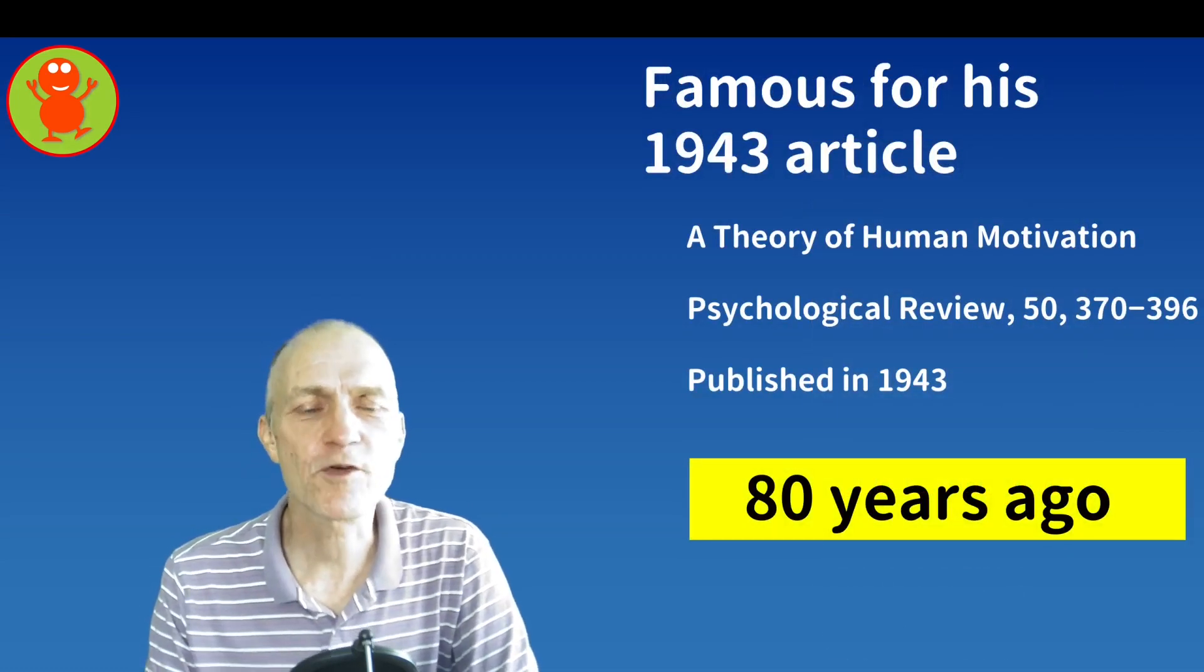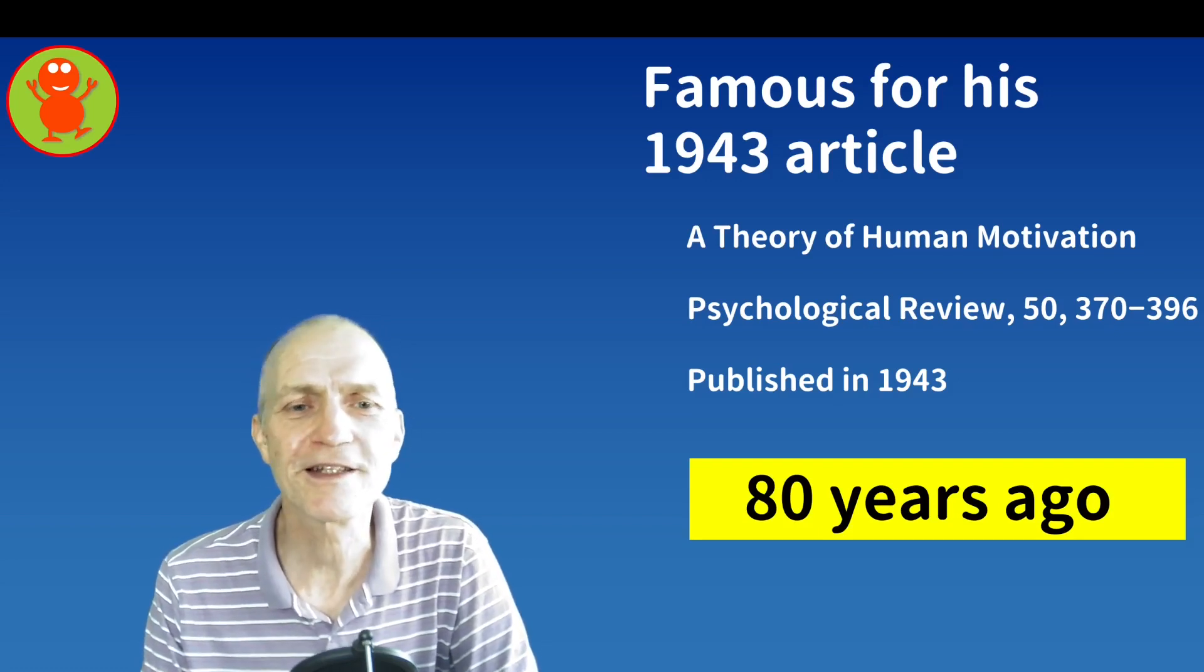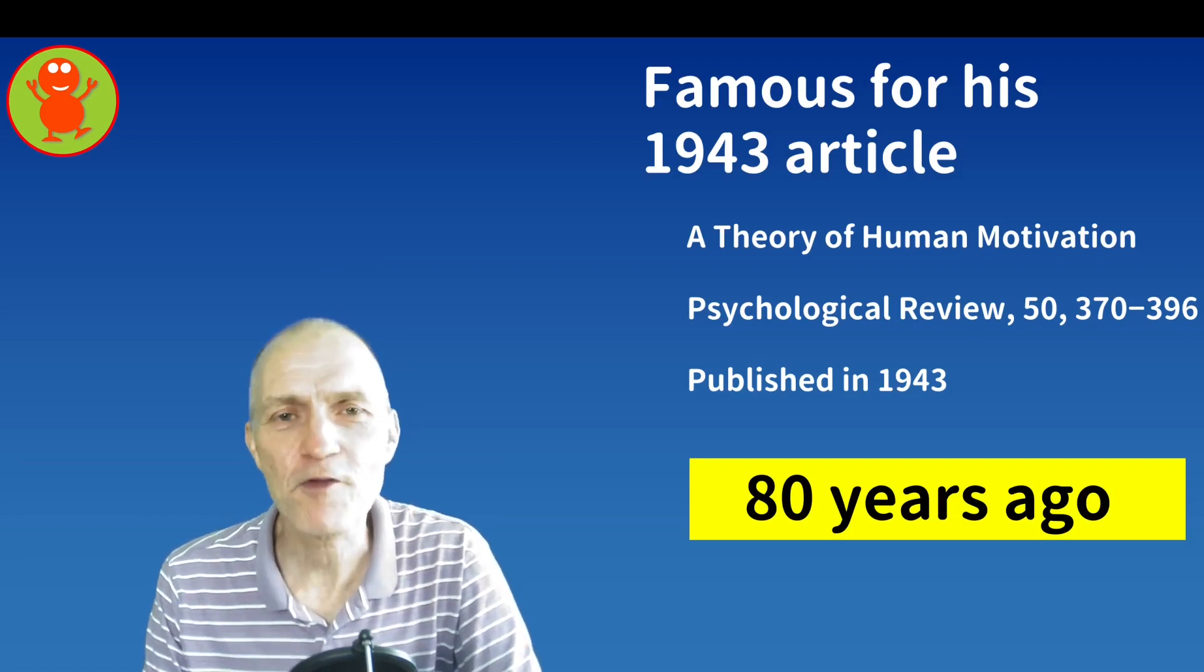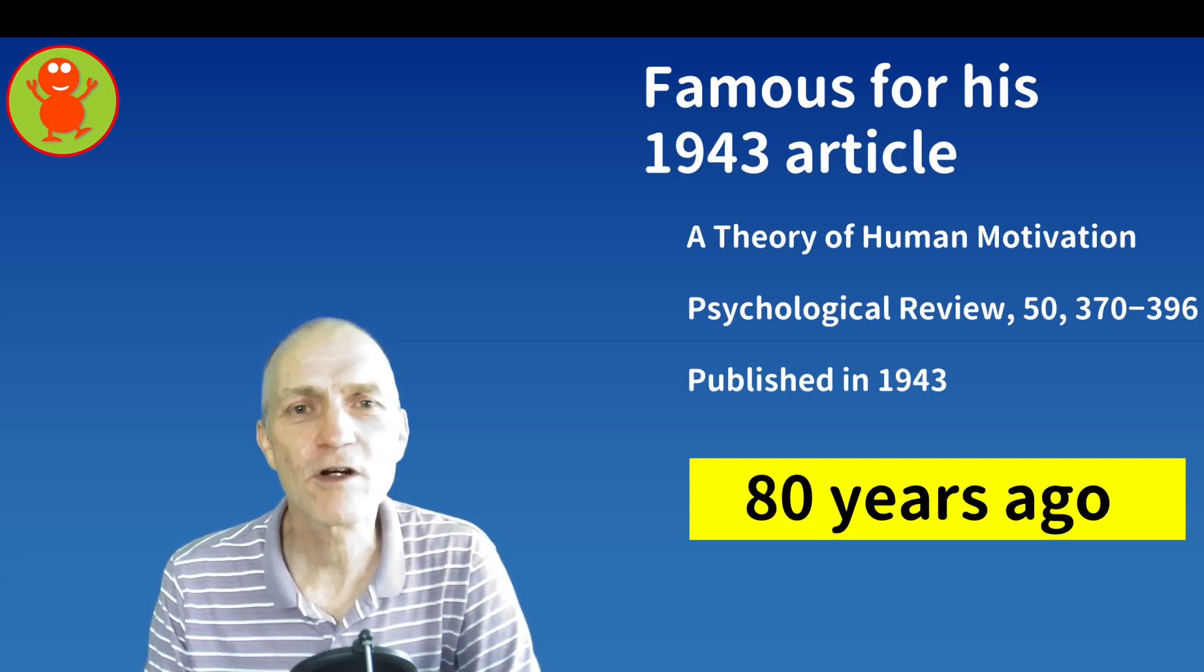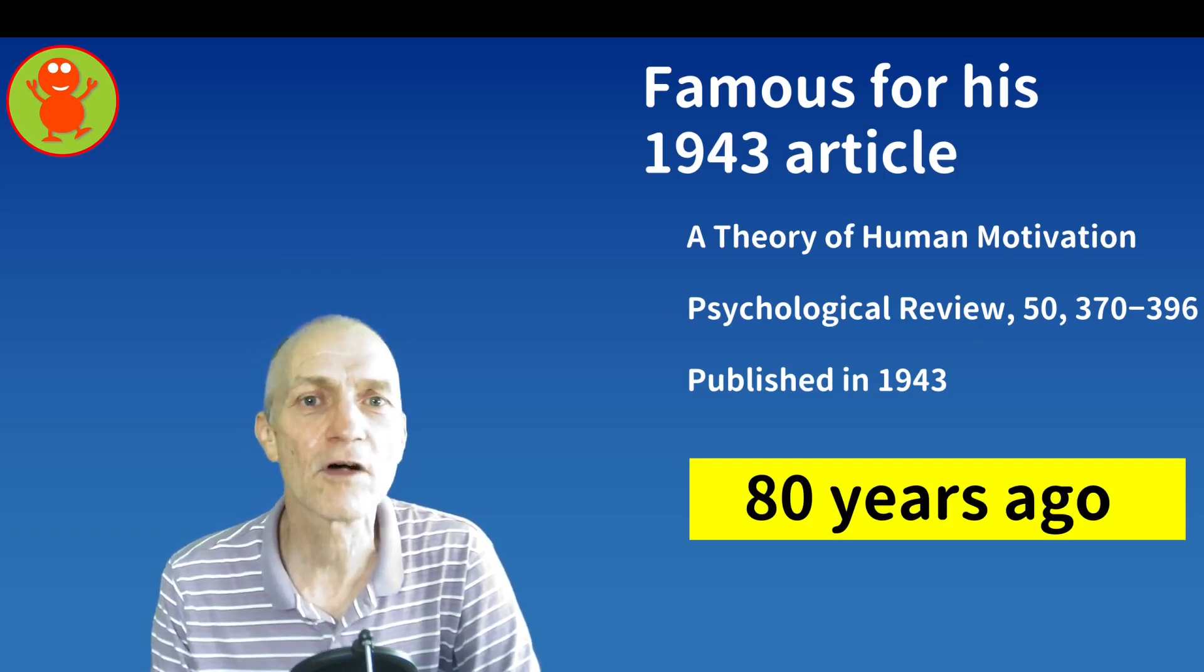Now I said he is famous for his 1943 article which was called A Theory of Human Motivation, published in Psychological Review. If it's still 2023 when you're watching this, that's exactly 80 years ago. So we're going to talk today specifically about what's in that paper and the influence it had on psychology.